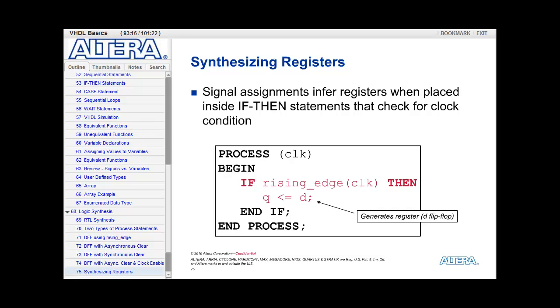So that will generate a register or D flip-flop. Now, if I had 5, 6, 7, 50, or 100 signal assignments listed underneath this statement, Q gets the value of D, they would each generate registers individually.